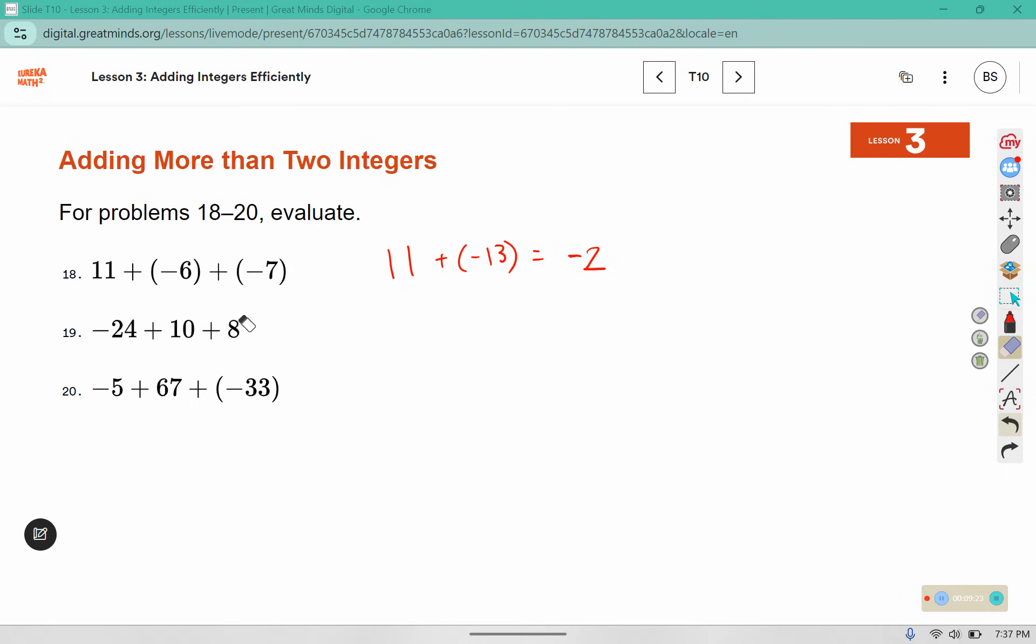For these, we're going to combine the ones that have the same sign. 10 and 8 are both positive, so I have negative 24 plus 18. Which of those has a greater absolute value? 24 would be the longer one, so our sign has to be negative. This is going to go backwards 24, and this will go forwards 18. So what's the difference, or what's left over? To get from 18 to 24, that's a change of 6.